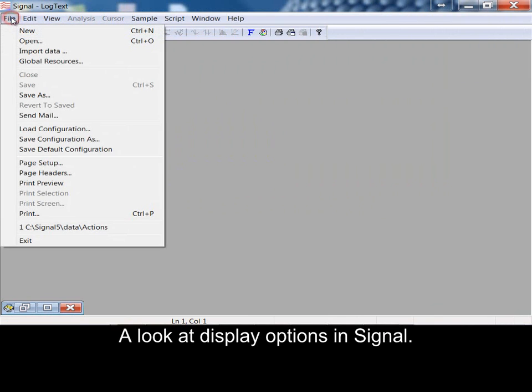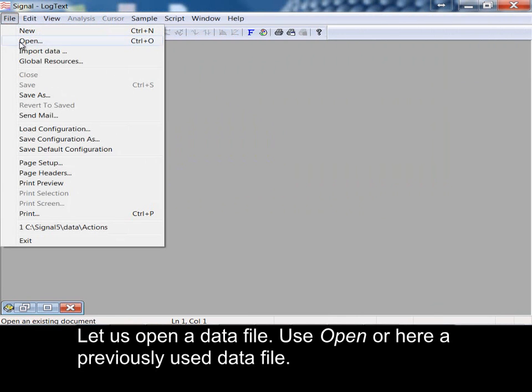A look at display options in Signal. Let us open a data file. Use open or here a previously used data file.